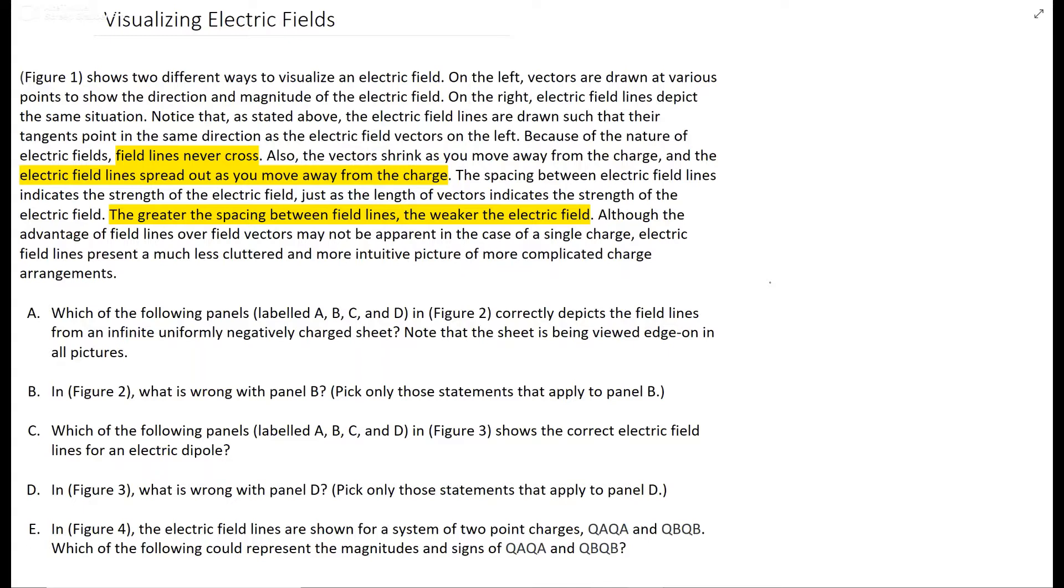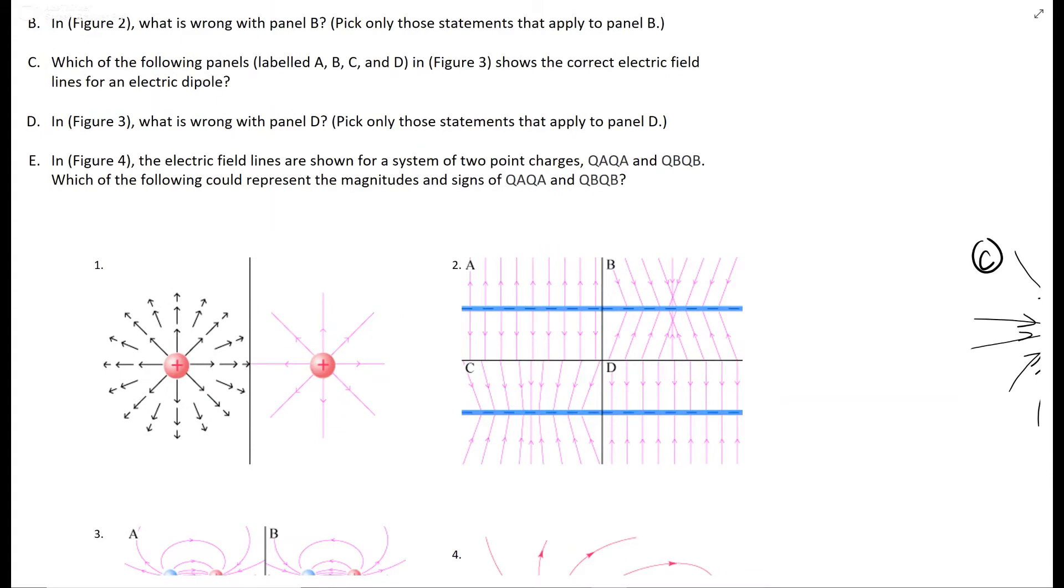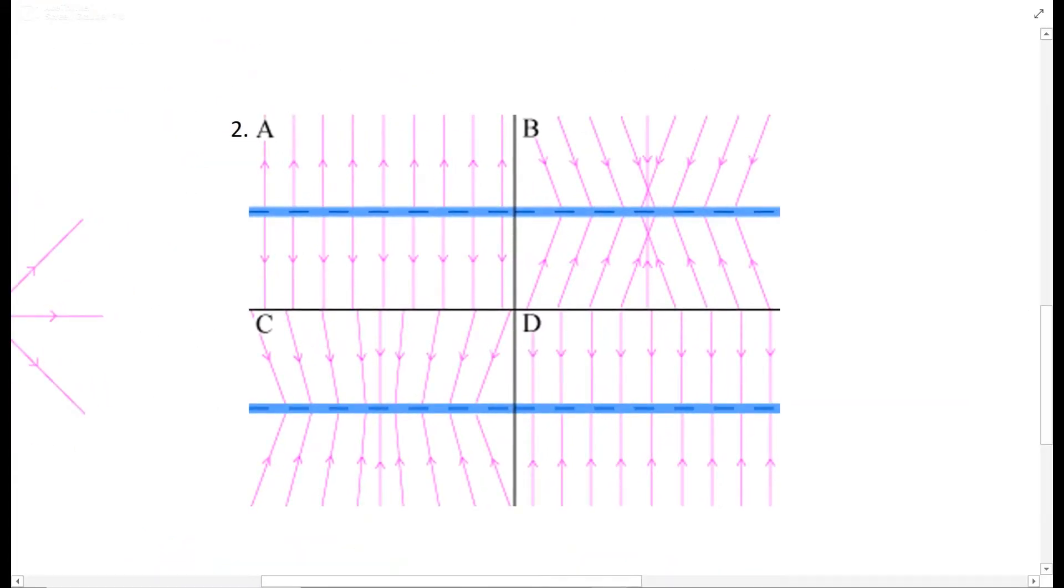So the first question asks which of the following panels shows a uniformly infinite negatively charged sheet correctly. Looking at these, they have little negative signs all across here, so that's what we want. The biggest hint with uniform is going to be equal spacing and straight lines. So this one automatically comes out, and this is automatically out. These are bent, but that's not uniform.